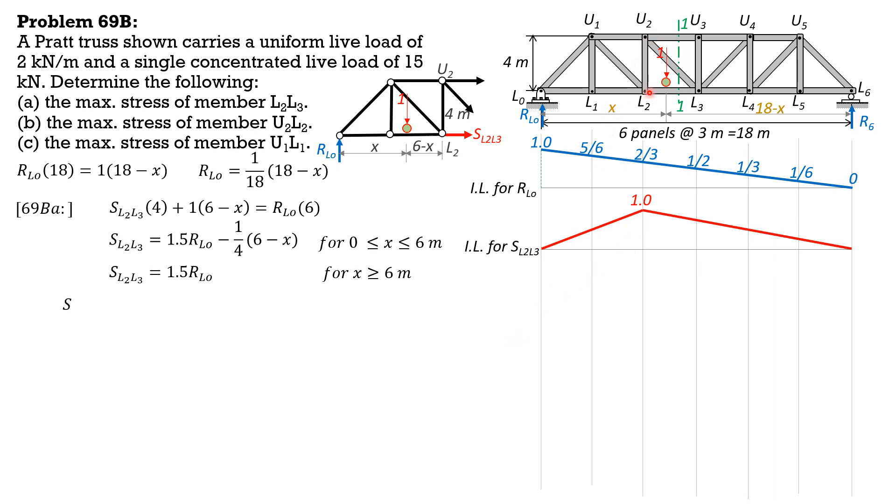Next for U2L2, let's consider section to the left of U2, section 22. SL2L3 max due to the live loads. We have 15 for the concentrated load. Then the maximum ordinate is 1. Then plus 2 times the area under the influence line. Since the member L2L3 is a bottom chord member at its intention, that's why the influence line is positive. All the diagram is positive. The area is positive because it is in tension. Therefore, SL2L3 max is equal to 33 kilonewtons and it is in tension.